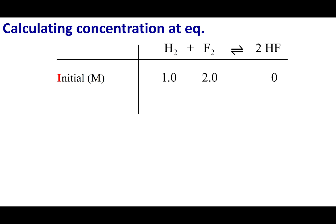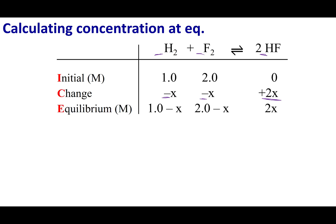Quick summary: I — write initial concentrations. C — determine what's being made. Here we make products and consume reactants, so reactants get minus signs and products get plus signs, then assign x, 2x, 3x, etc. based on coefficients. E — equilibrium is always I plus C.